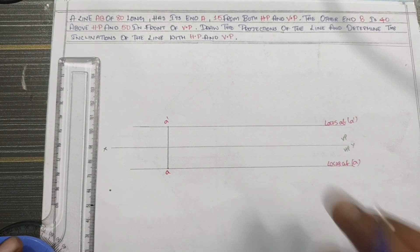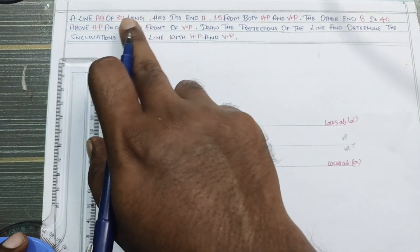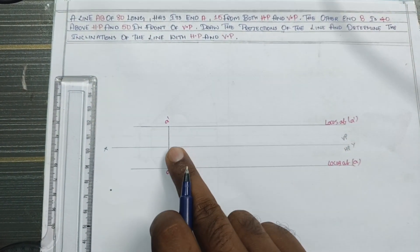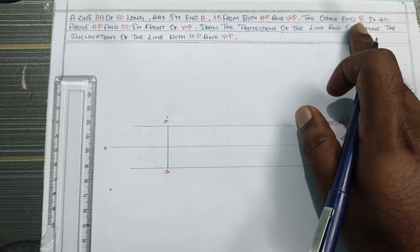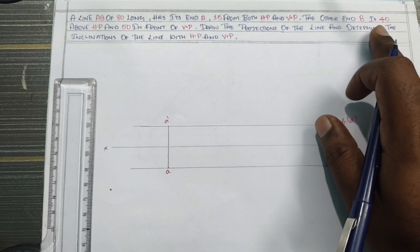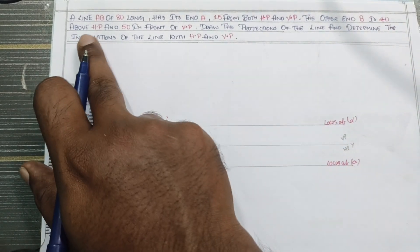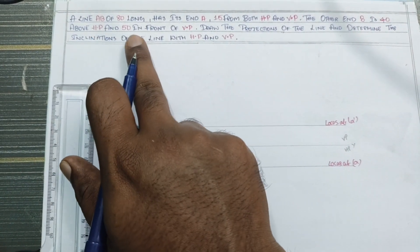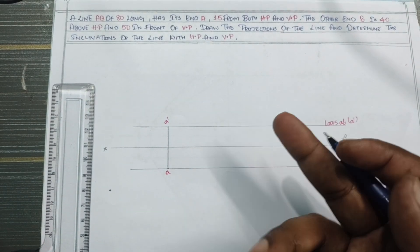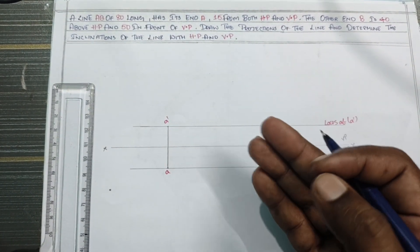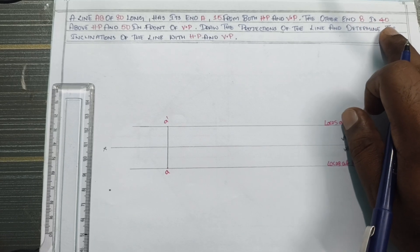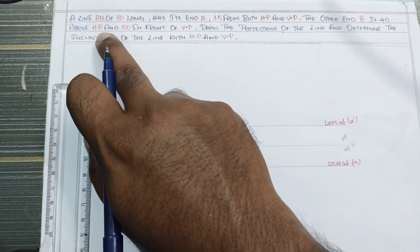Next step. Here is another line. It will draw: 40 HP, 50 in front of VP.